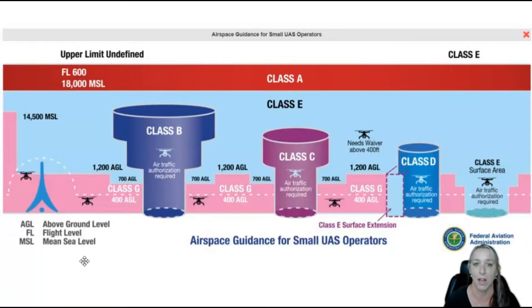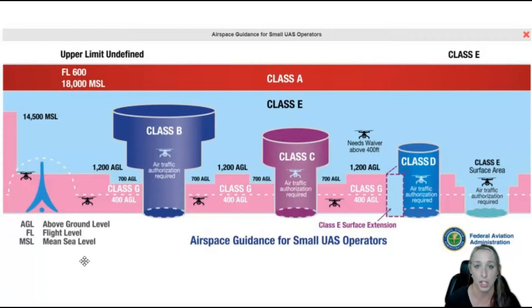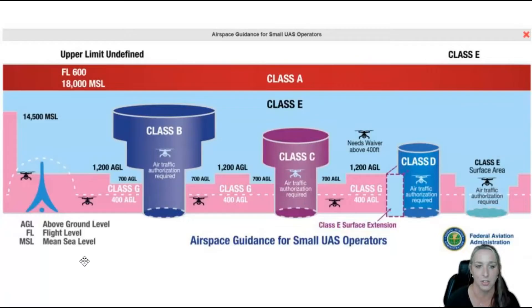We have Class Alpha, Class Bravo, Class Charlie, Class Delta, Class Echo, and Class Golf — so A, B, C, D, E, and G. We do not have a Class F or Class Foxtrot airspace in the National Airspace System.